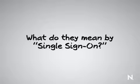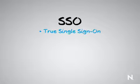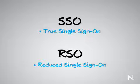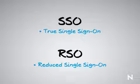The very first thing we're going to do is figure out what exactly the customer means by single sign-on, because different people have a different outlook on that. For example, are they looking for SSO — true single sign-on — or are they looking for RSO, reduced single sign-on? They are different things. Putting this up on the board will be a good way to introduce the topic to your customer or to draw that piece of information out of them.